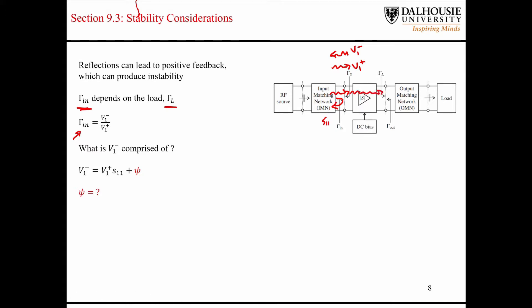But some of it is going to make its way through, and then some of it is going to be reflected back when it meets the output matching network, depending on gamma L — how good it's matched. And then some of that energy is going to make its way back again and appear as part of the backwards traveling wave on the input. This is the behavior that we're trying to capture in this expression.